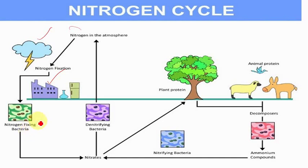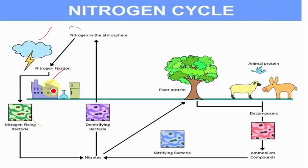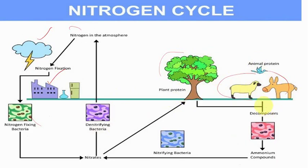After fixation, certain plants consume the ammonium ions. However, some plants need them in a further modified form, so they are converted into nitrites by Nitrosomonas, and then from nitrites to nitrates by Nitrobacter. These are then consumed by plants, which are in turn consumed by herbivores and carnivores — the process of the food chain goes on. When they die, decomposers — Pseudomonas and certain bacteria — denitrify the nitrogen and transport it back to the atmosphere in elemental form. So the cycle is completed.